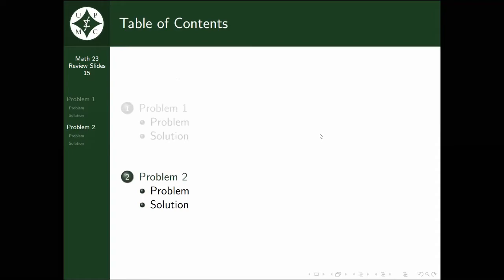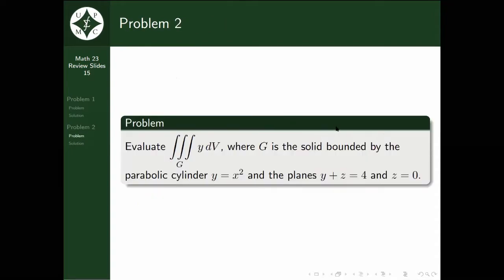Now let's move on to problem 2: evaluate the triple integral over G of y dV, where G is a solid bounded by the parabolic cylinder y = x², and the planes y + z = 4 and z = 0. Again, I'll give you guys a little time to pause the video.